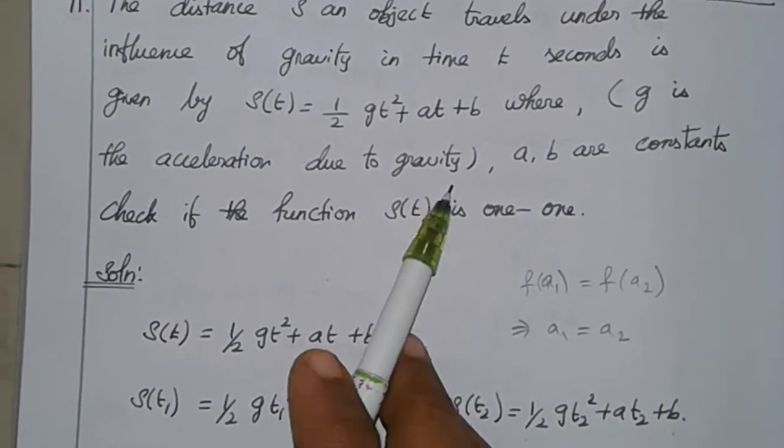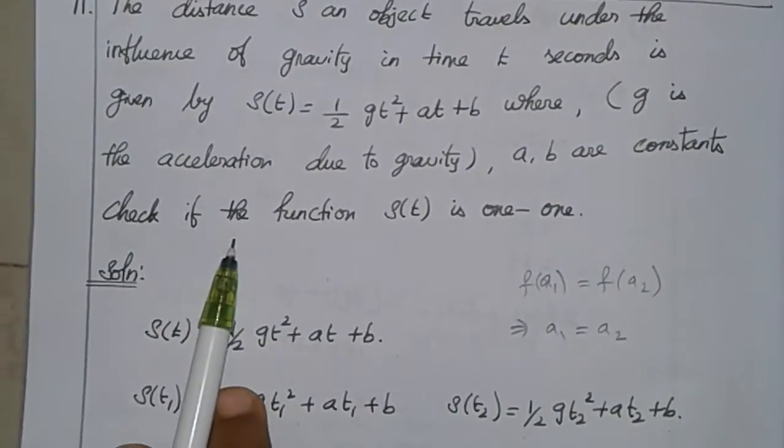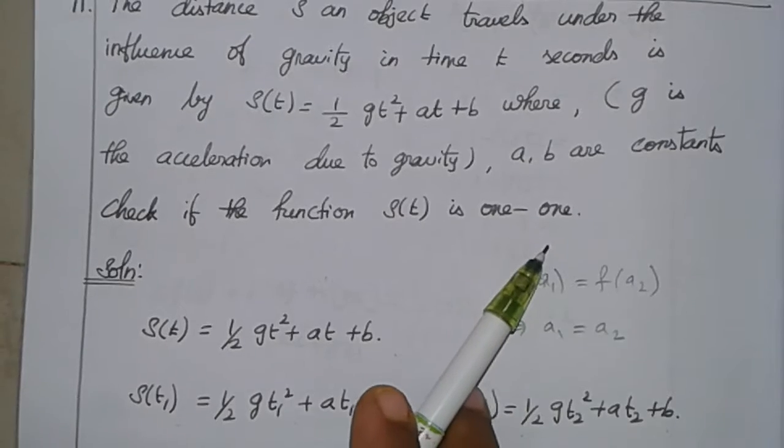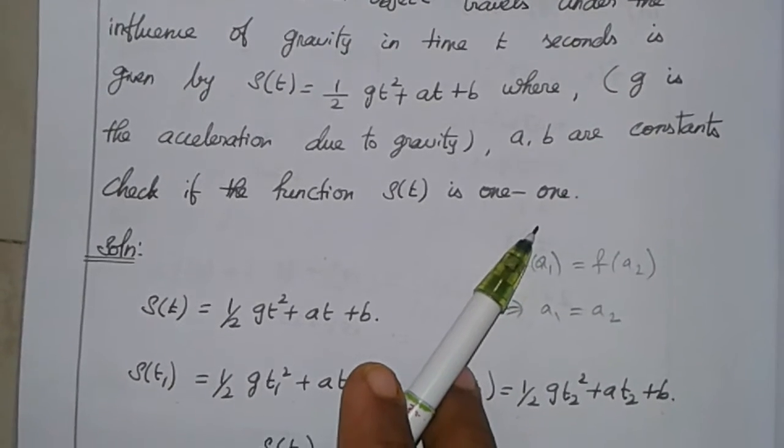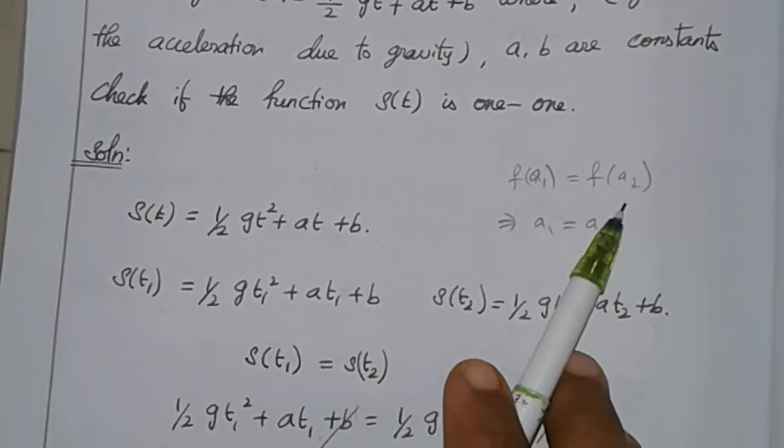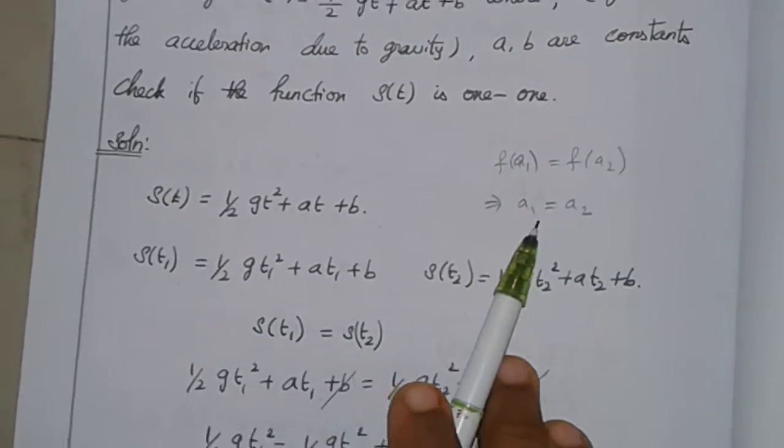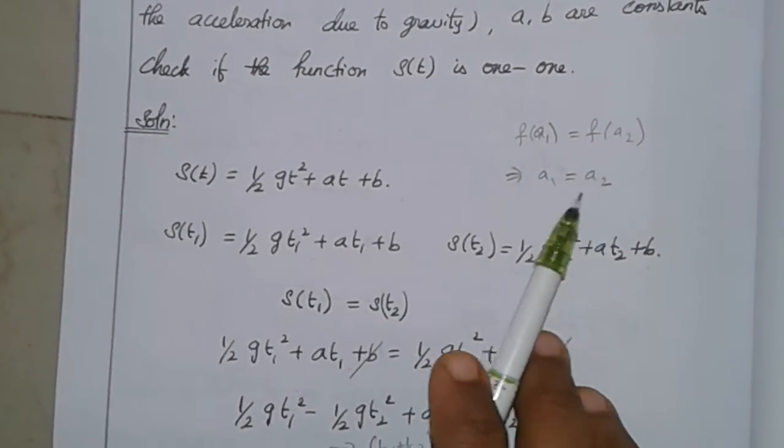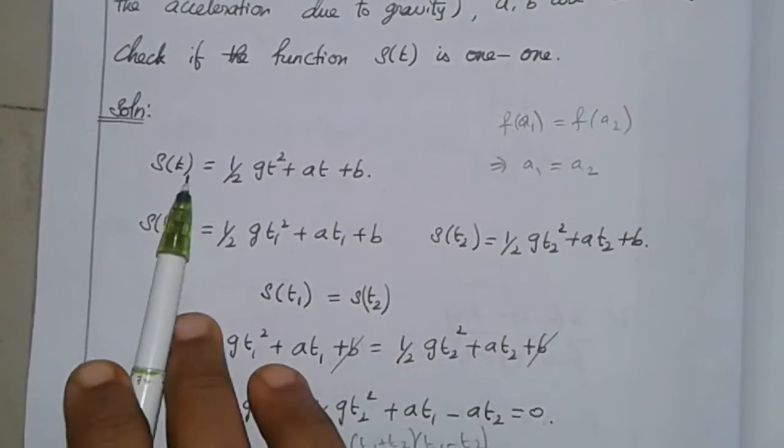where g is the acceleration due to gravity, and a, b are constants. Check if the function s(t) is one-to-one. The condition for one-to-one is: f(a₁) = f(a₂) implies a₁ = a₂. Then the function is a one-to-one function.